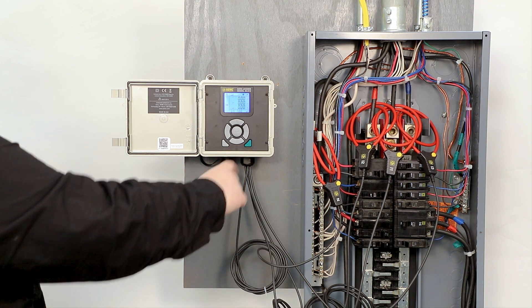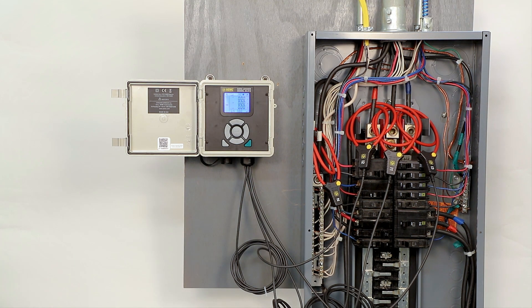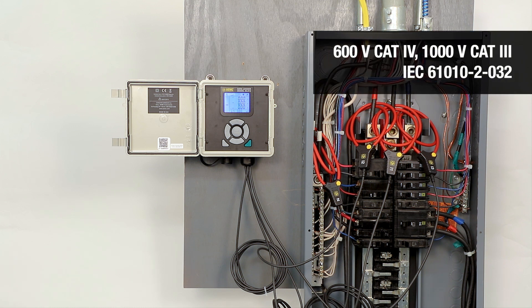Here is the latest AEMC instruments 3 and 4 channel AC data loggers, the DL913 and DL914. These instruments are rated 600V Cat4, 1000V Cat3 and comply with IEC 61010-2-32.